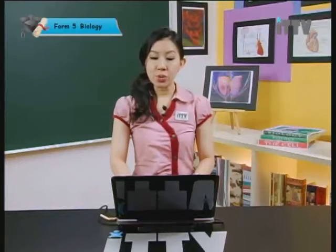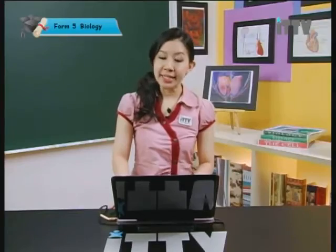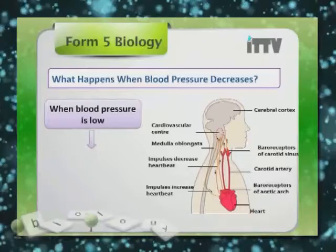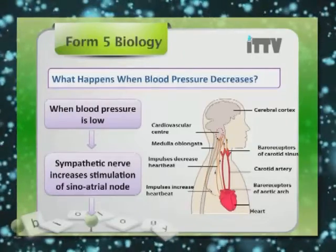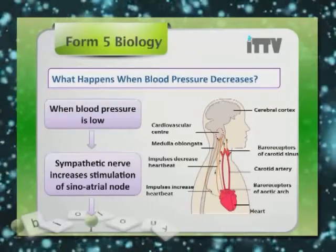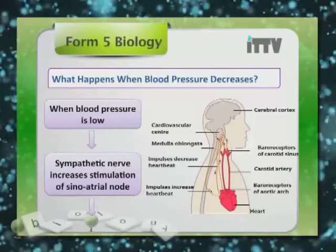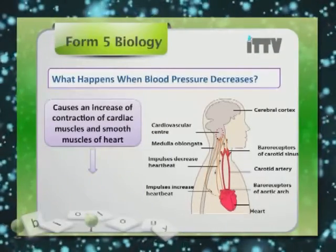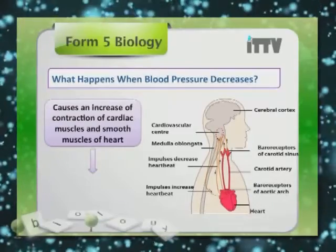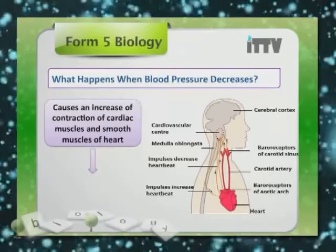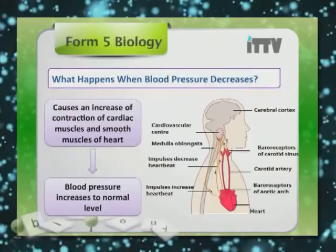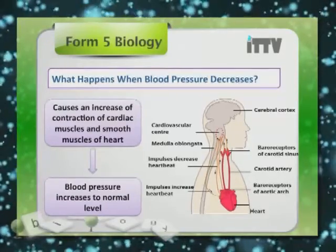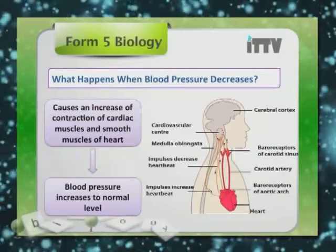When there is a decrease in blood pressure, the sympathetic nerve increases stimulation of the sinoatrial node. This causes an increase in contraction of cardiac muscles and smooth muscles of the heart. This results in an increase of blood pressure back to the normal level.